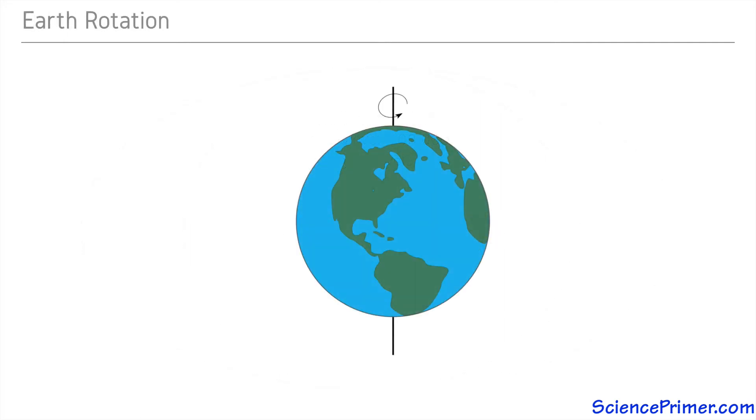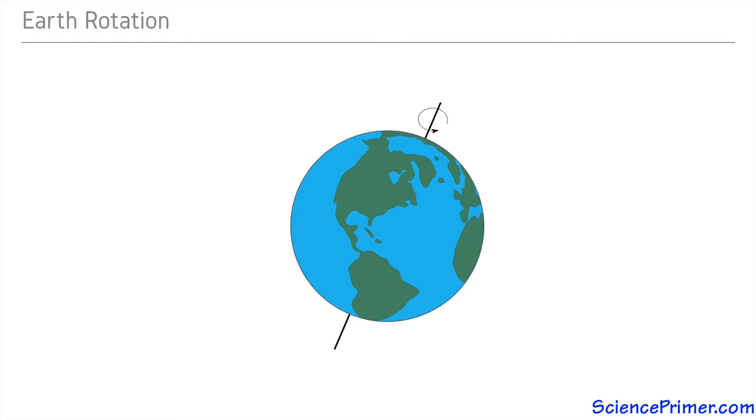In addition to orbiting the sun, the Earth rotates around its own axis once a day. This rotation is counterclockwise when viewed from the north pole, causing the sun to appear to rise from the east. The axis of rotation is not perpendicular to the plane of the Earth's orbit around the sun. It is tilted at an angle of 23 degrees.